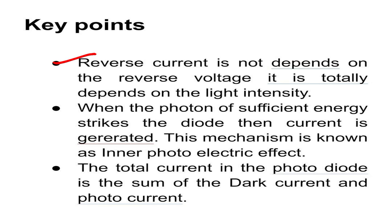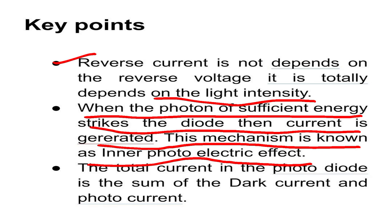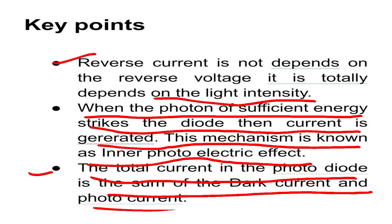Key points: the reverse current does not depend on the reverse voltage — it completely depends on the light intensity. When a photon of sufficient energy strikes the diode, current is generated; this mechanism is known as the inner photoelectric effect. The total current in the photodiode is the sum of dark current and photocurrent.